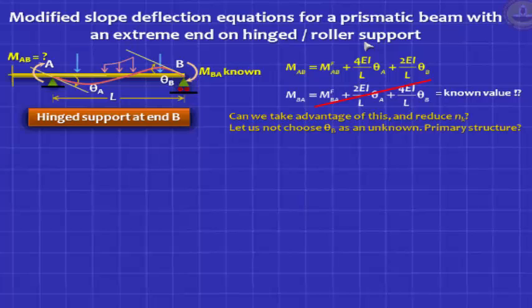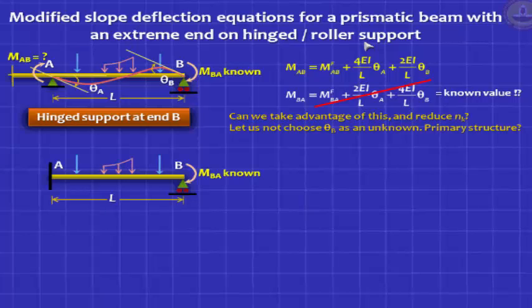Once you make a decision that I don't see theta B as an unknown anymore, then my kinematically determinate structure, my primary structure should also reflect this understanding, which means I don't arrest theta B. I let it be what it is. So this becomes my element AB in which I arrest theta A for sure, because I don't know MAB, but I don't touch B. I leave B the way it was in the original structure. It's a roller support or a hinge support. I leave it like that. And then I put the loads on it.